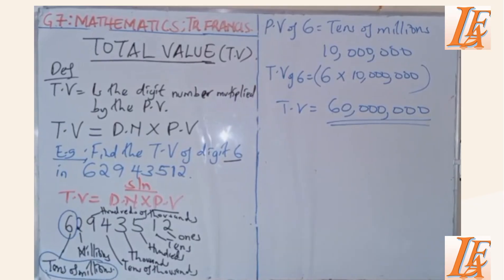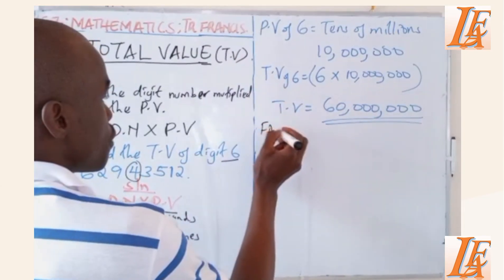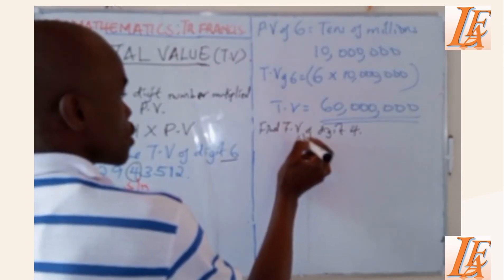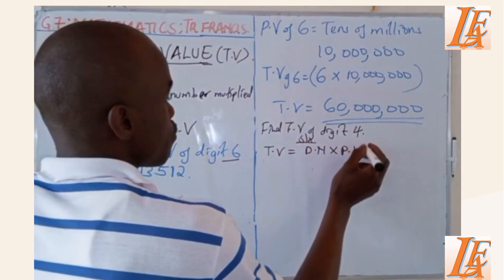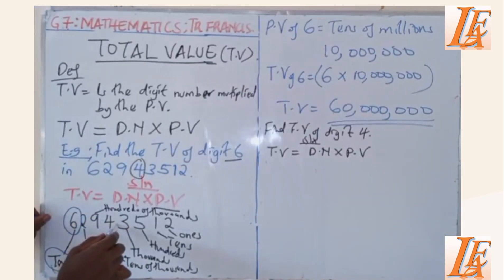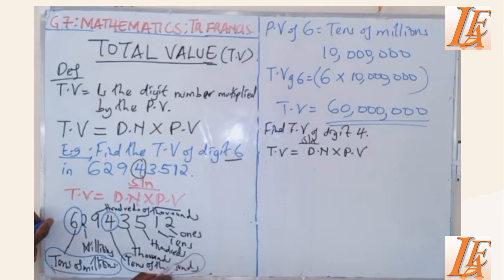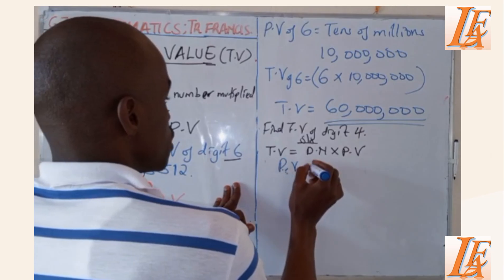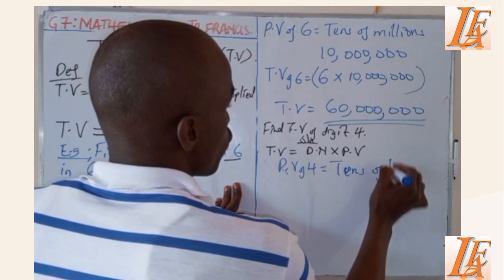If you are asked to find the total value of digit 4 — find the total value of digit 4. Again, the solution is just the same: total value is equal to digit number times place value. So the place value of 4: if you come here, 4 is here, it is only appearing once. 4 is in tens of thousands. So we say the place value of digit 4 is tens of thousands.